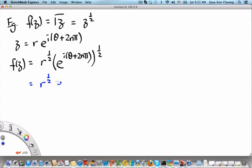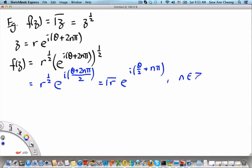You get √r, and then because the square root of an exponential, you can just bring the 1/2 into its exponent. We get e^(i(θ+2nπ)/2), which is √r × e^(i(θ/2 + nπ)) for n being an integer.